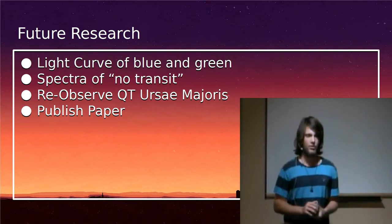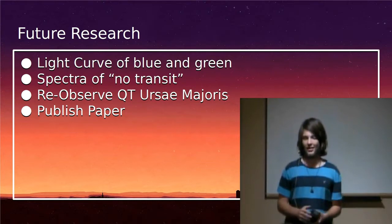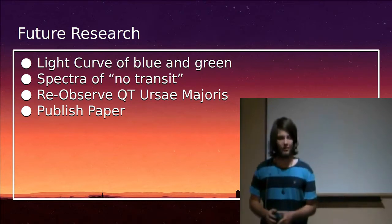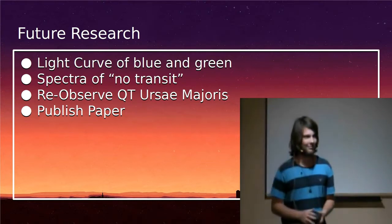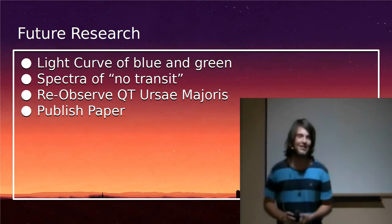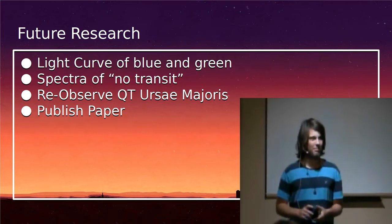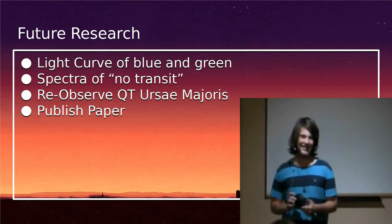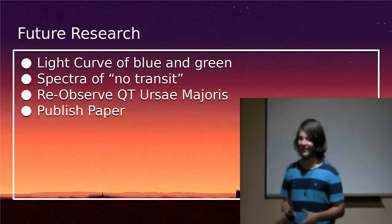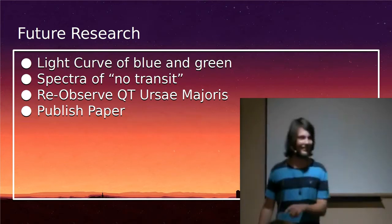Along with that and the primary transit, I can essentially subtract the primary transit from the no transit and get the temperature of the secondary star. I also want to observe or re-observe QT Ursa Majoris, which is a star in the Ursa Majoris constellation, the big bear. And it's a real cutie, isn't it? And the reason I want to do that because it was the inspiration for my project. It's kind of a long story, but I originally wanted to observe that too, so I'm going to do it.